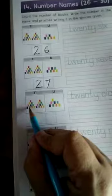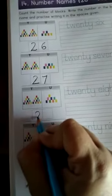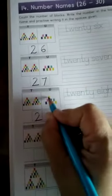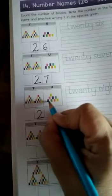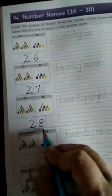Once again, 1 ten, 2 tens means 20, and this is 1, 2, 3, 4, 5, 6, 7, 8. This is 8. So 28.